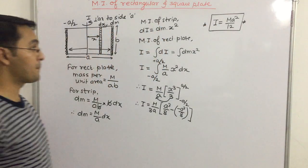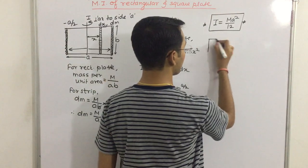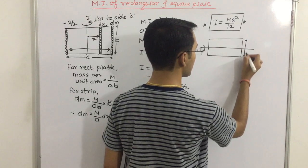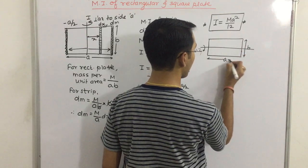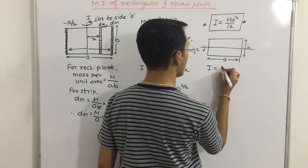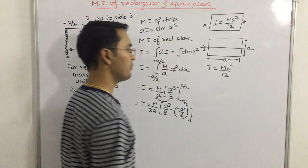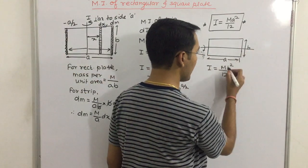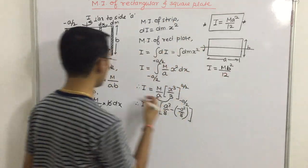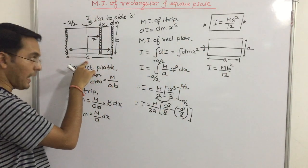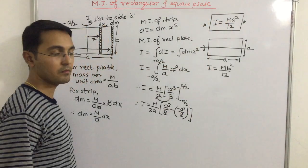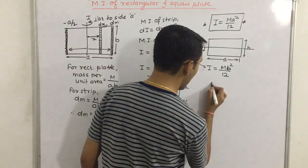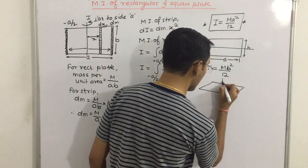Similarly we can prove that, if axis is perpendicular to B side, moment of inertia in this case will be m B square by 12. Jis side ko perpendicular hai woh lena hai. When axis B side ko perpendicular hai, we write m B square by 12. Now what will happen if axis is passing like this?